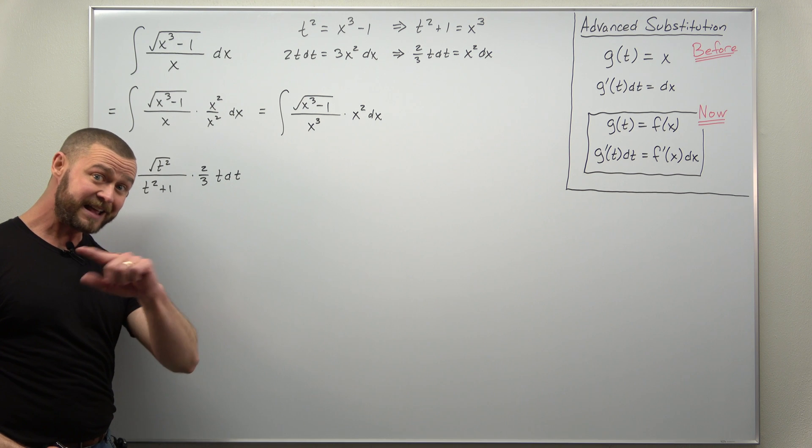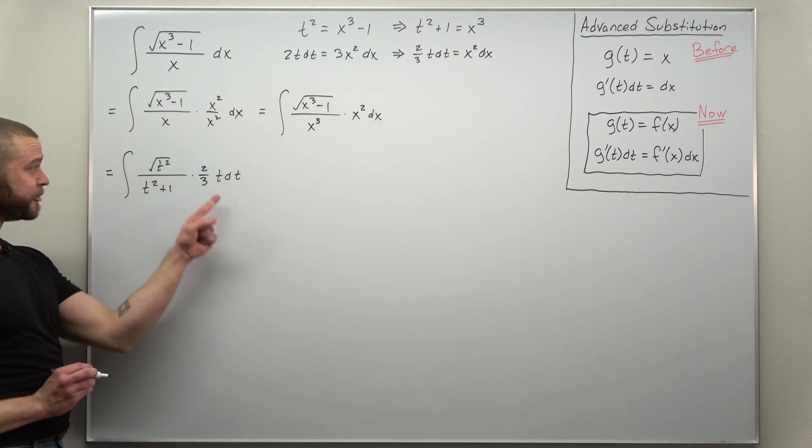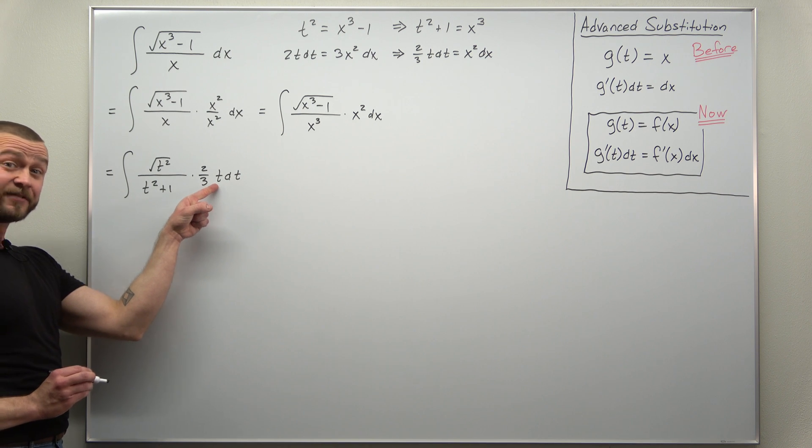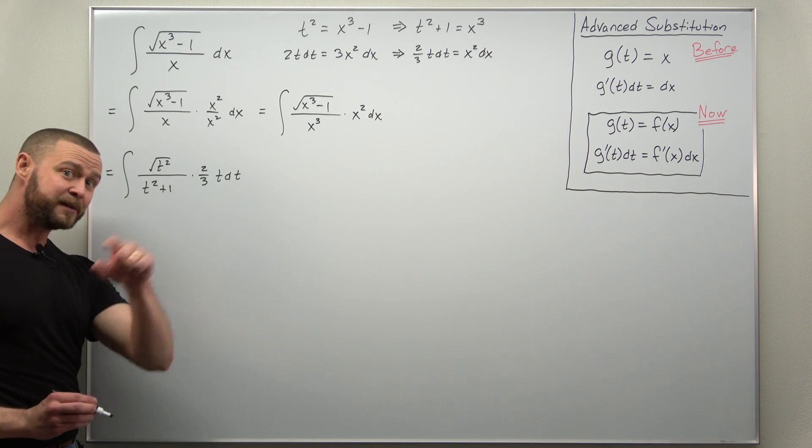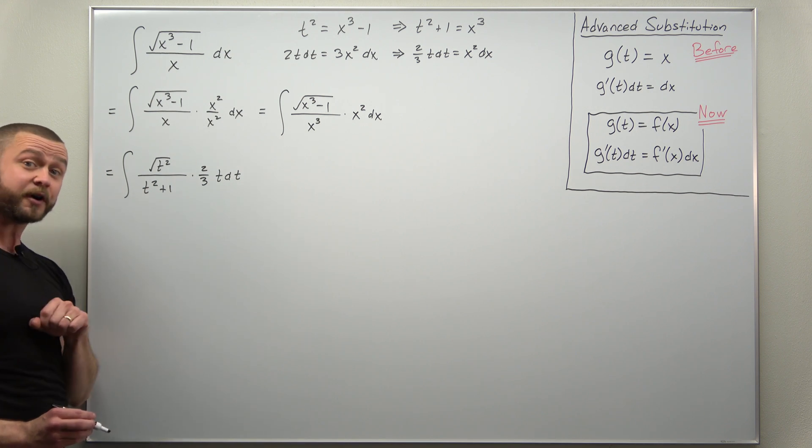All right and from here it's just simplifying and combining. Square root of t squared cancels to t. And I can bring this t from the differential up there to write it as t times t, t squared. So let's go ahead and do that and bring the two-thirds out front.